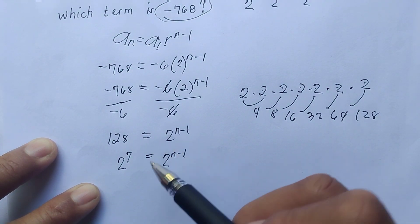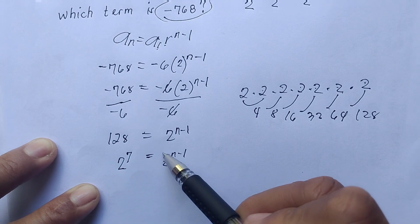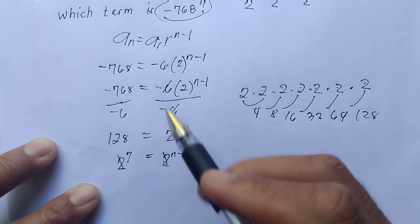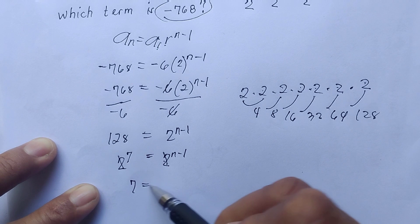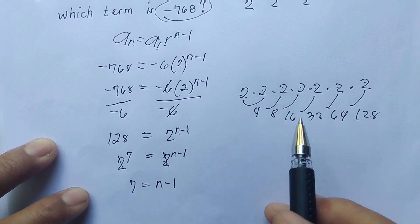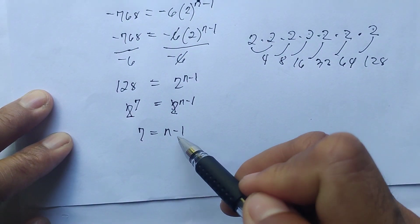As you can see, we already have equal bases, so we can cancel out that one for the shortcut. Then bring down 7 equals n minus 1.